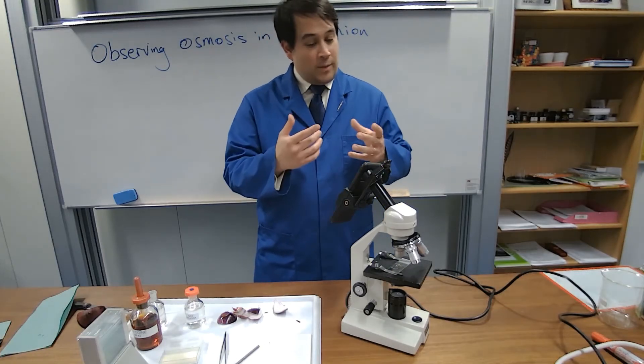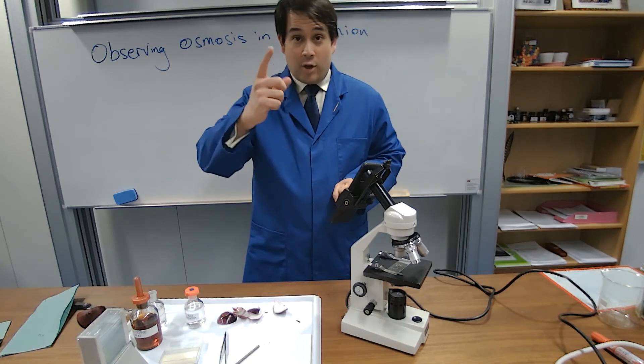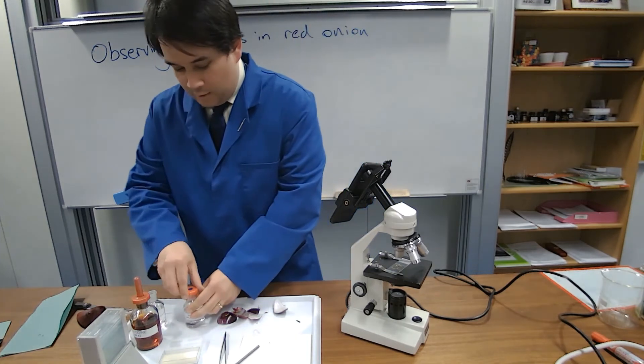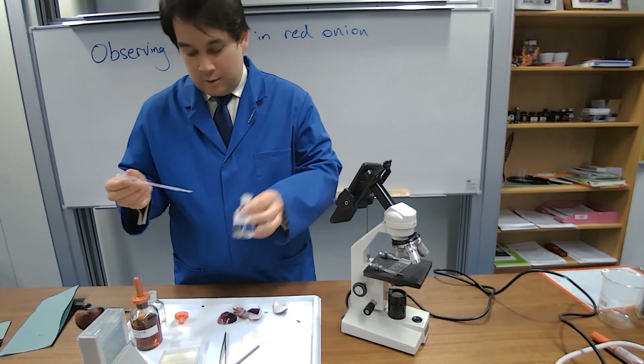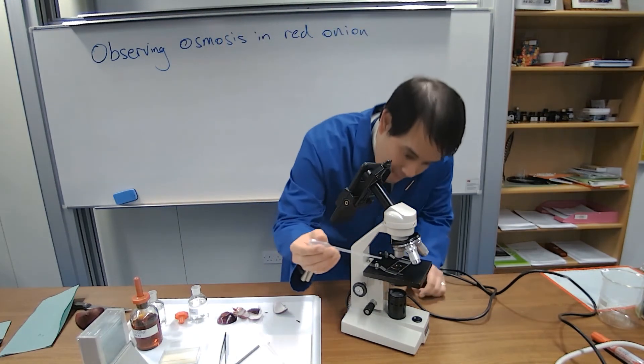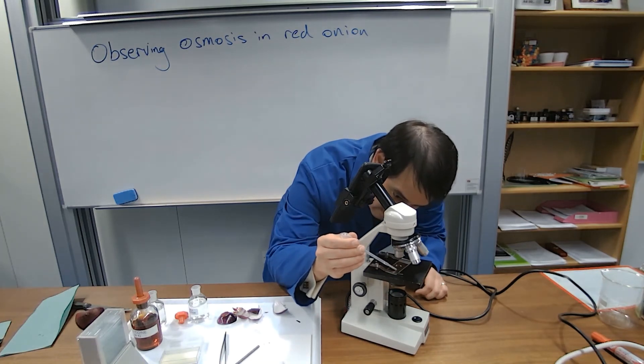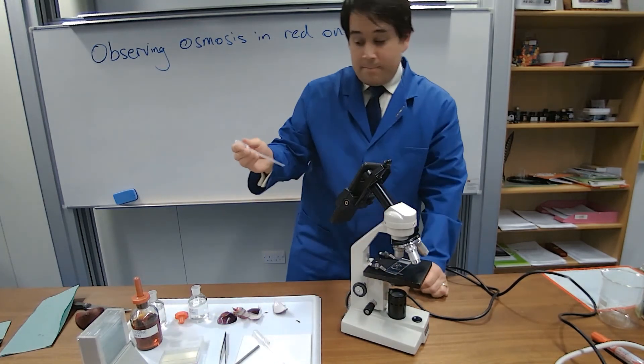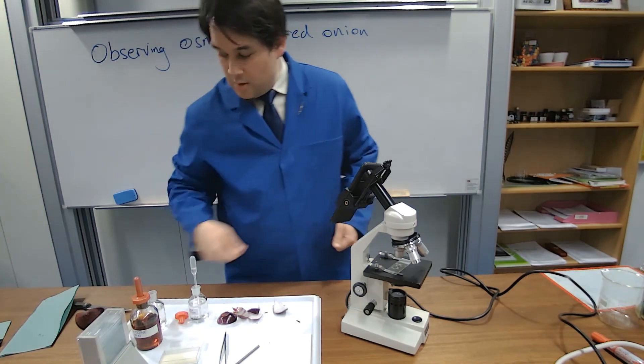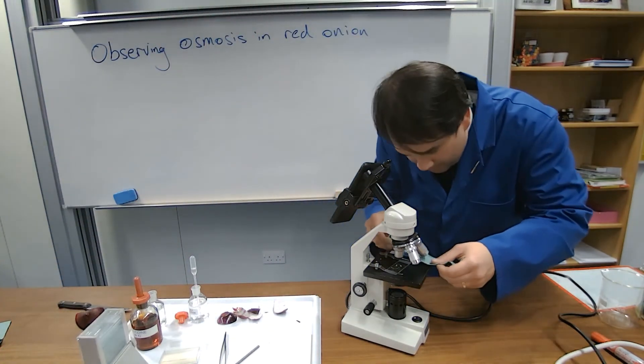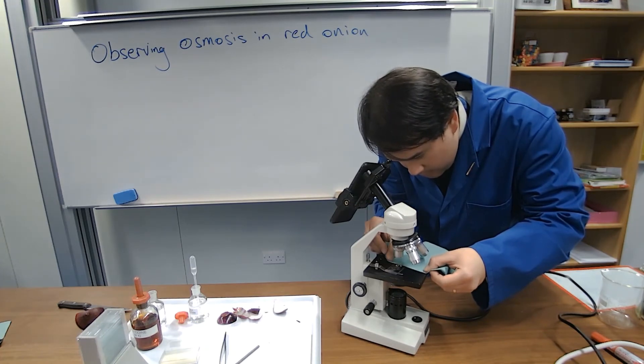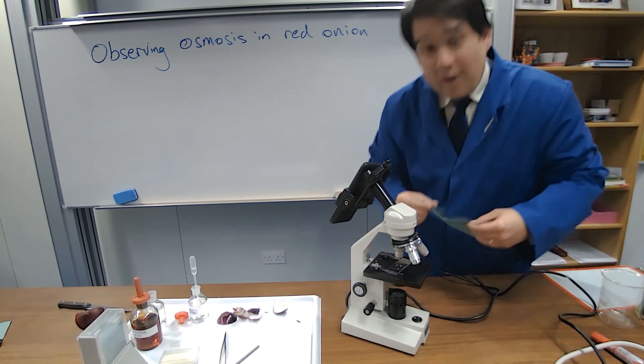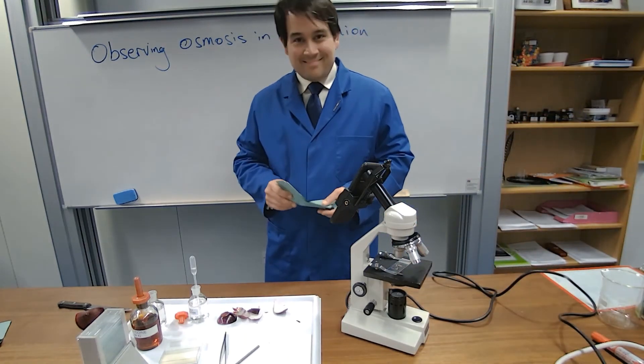So now that I've looked at the cells in water, I'm going to add some concentrated salt solution. I take a bit of the salt solution and add it to the side here, on the side of the cover slip, and then pull that through with some paper and dab it along, like that. And now the cells are in salt water. Let's have a look again.